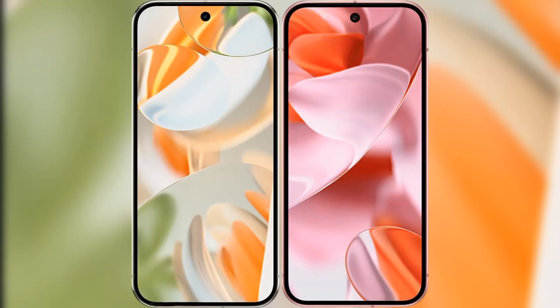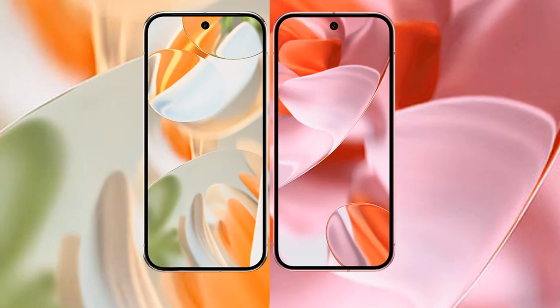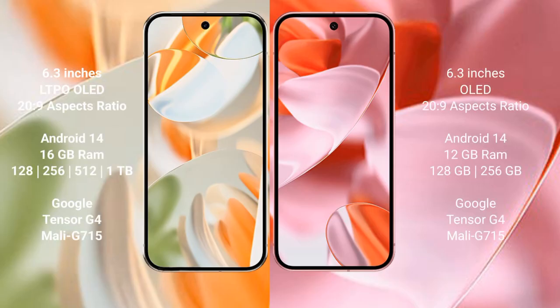I will compare the new Google Pixel 9 Pro with Google Pixel 9. Google Pixel 9 Pro has a 6.3-inch LTPO OLED display and Tensor G4. Google Pixel 9 also has a 6.3-inch OLED display and Tensor G4.